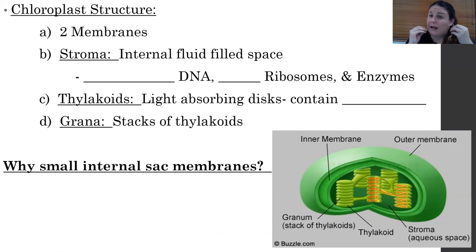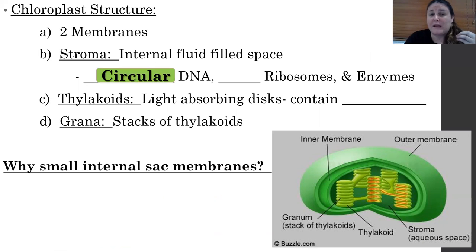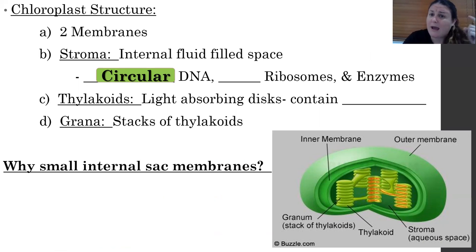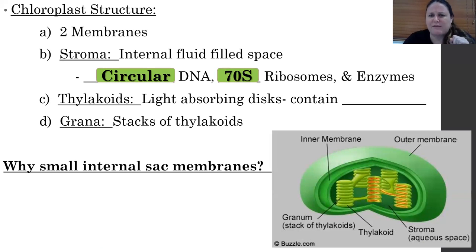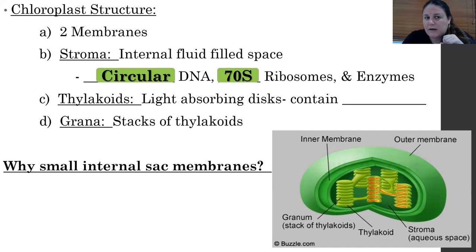The chloroplast is made out of two membranes — an outer membrane and an inner membrane. It also has fluid inside, like a gusher. Inside that fluid is circular DNA — yes, chloroplasts have their own DNA — their own ribosomes, which are 70S ribosomes, and their own enzymes.